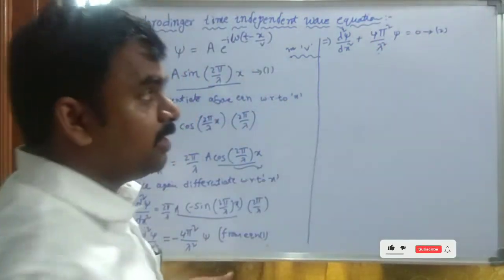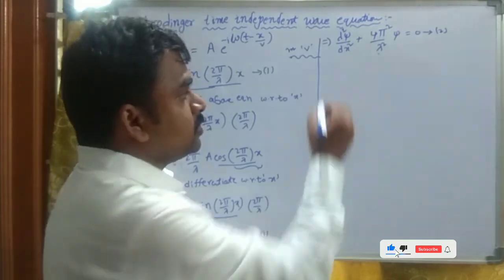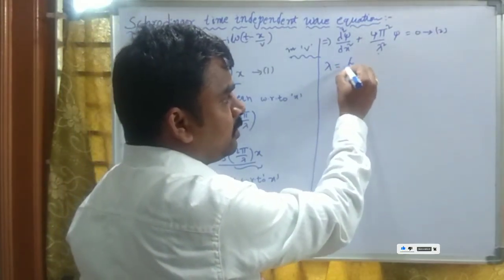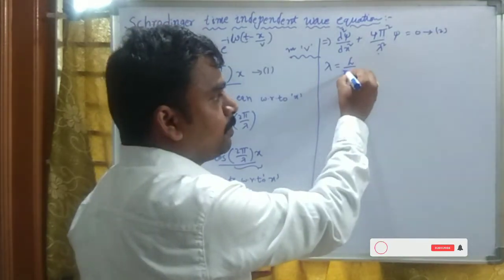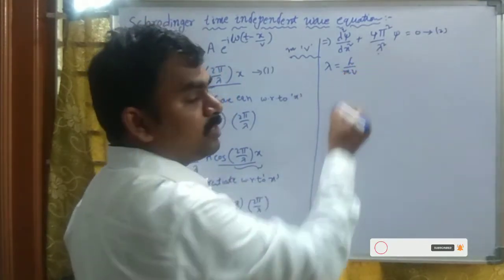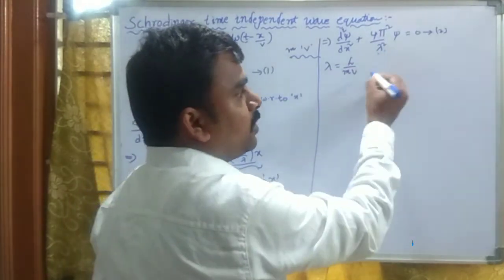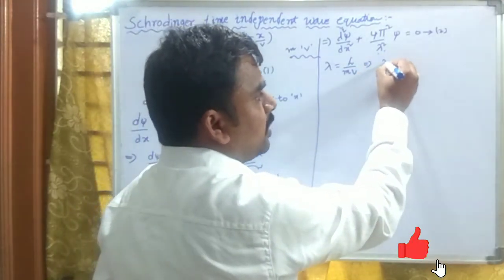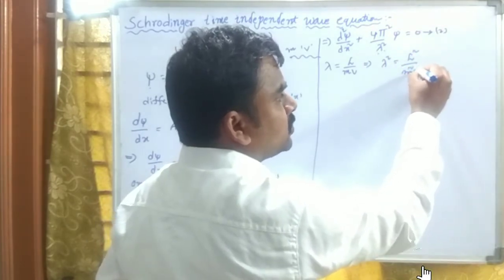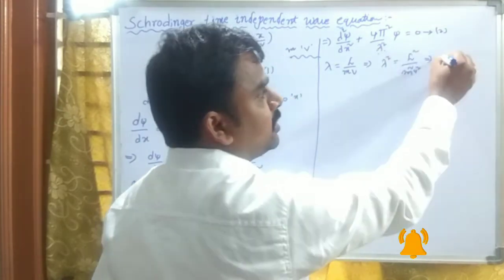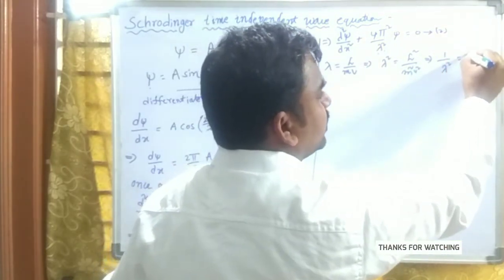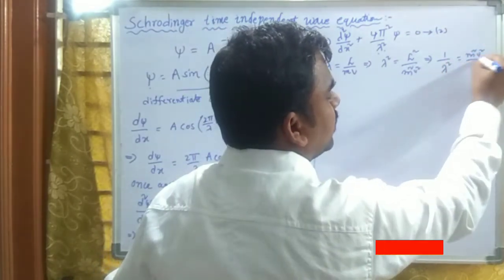Here, λ is the de Broglie wavelength associated with a particle of mass m moving with velocity v. So λ = h/mv, which gives λ² = h²/(m²v²). Since λ² is in the denominator, we have 1/λ² = m²v²/h².